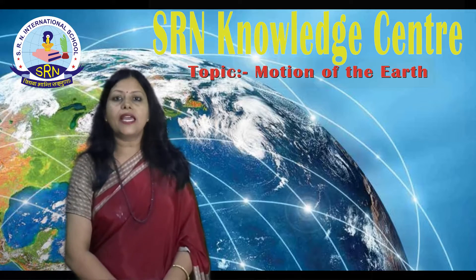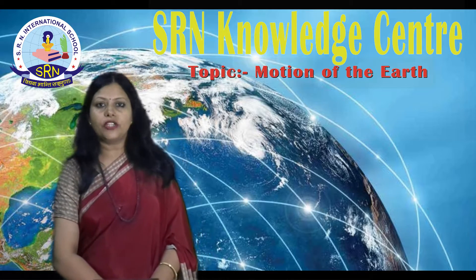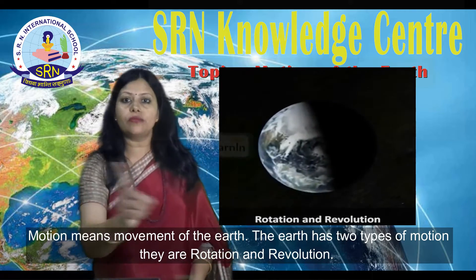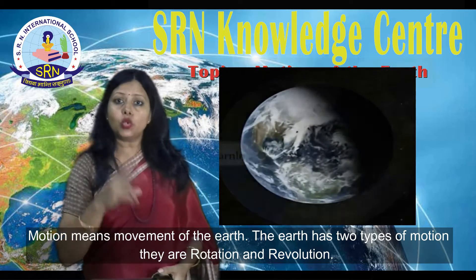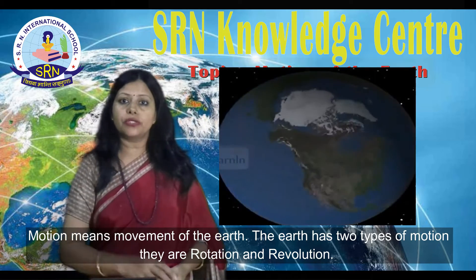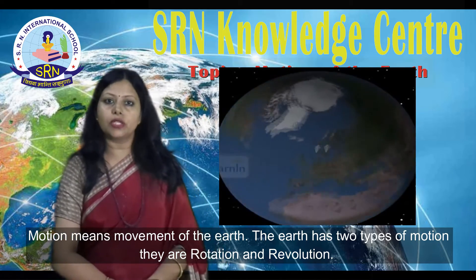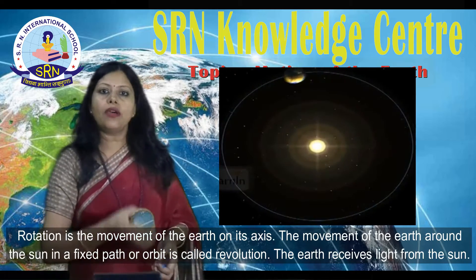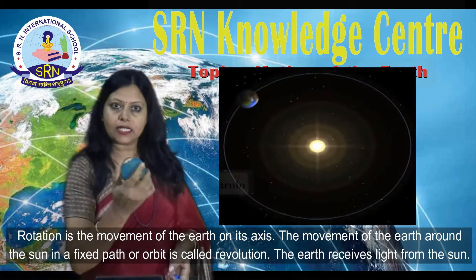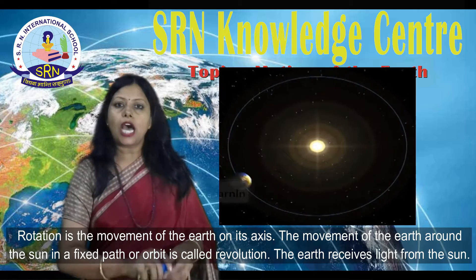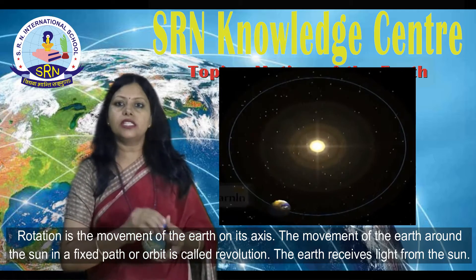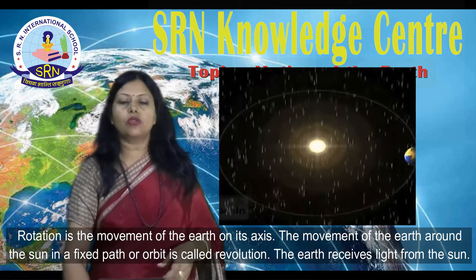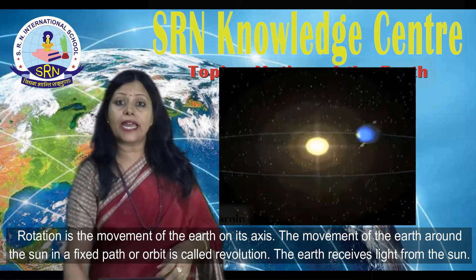Hello students. I have taken the geography topic: motion of the Earth. Motion means movement of the Earth. The Earth has two types of motion — they are rotation and revolution. Rotation is the movement of the Earth on its axis. The movement of the Earth around the Sun in a fixed path or orbit is called revolution.